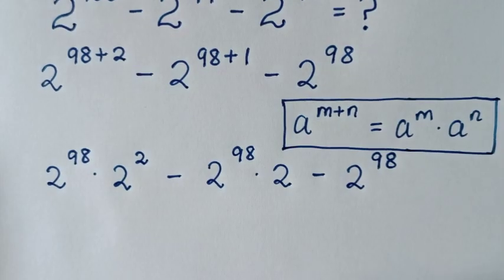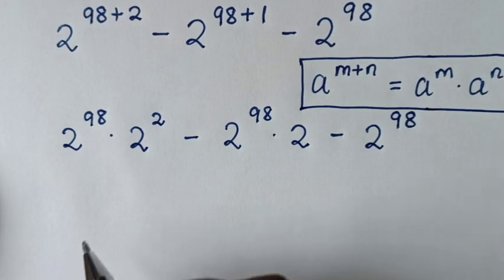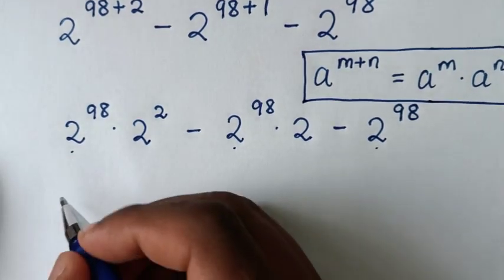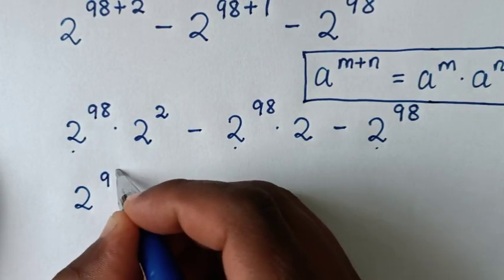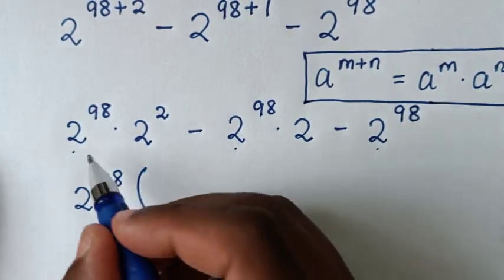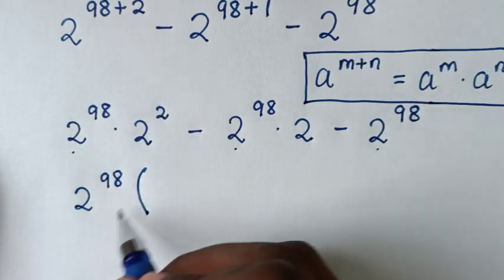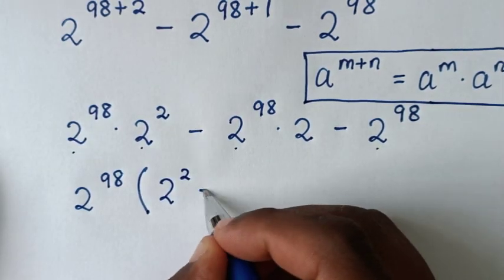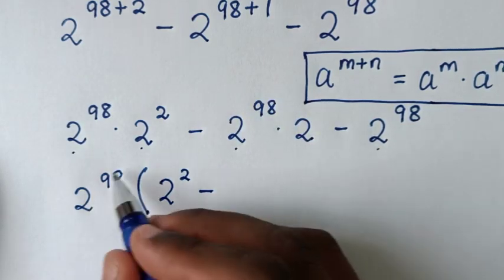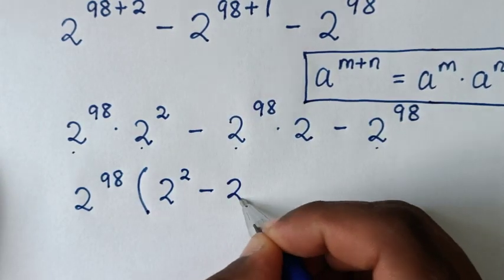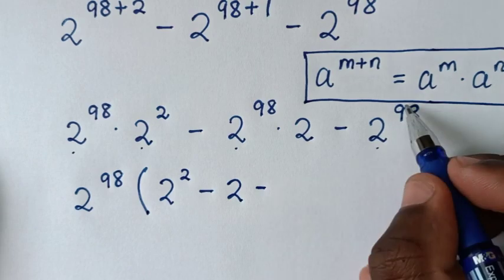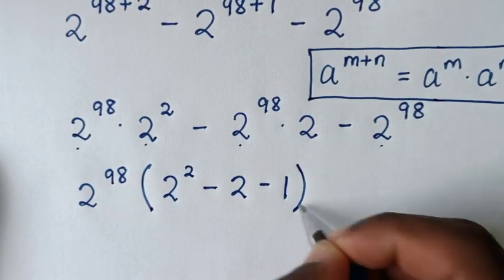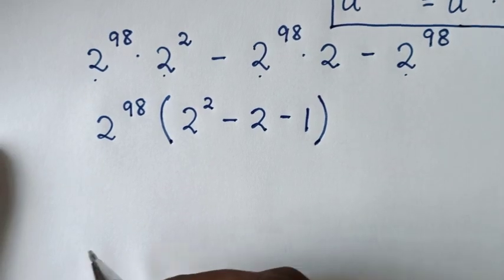Now from here, 2 power of 98 is common, so we take 2 power of 98 out of the bracket. Dividing each term by 2 power of 98 gives 1 inside the bracket.